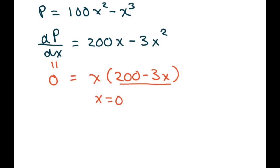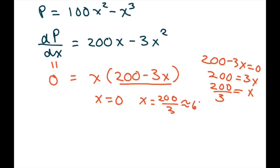For the other piece, we have 200 minus 3x equals 0. So 200 equals 3x, and x equals 200 divided by 3. Using a calculator, that's approximately 66.667.